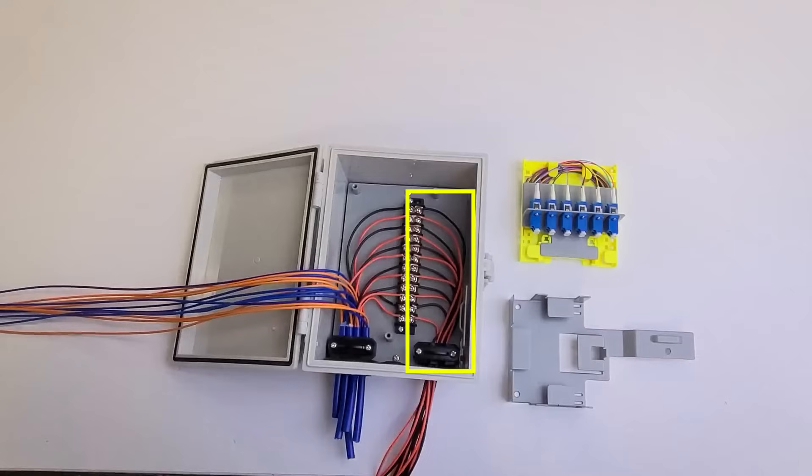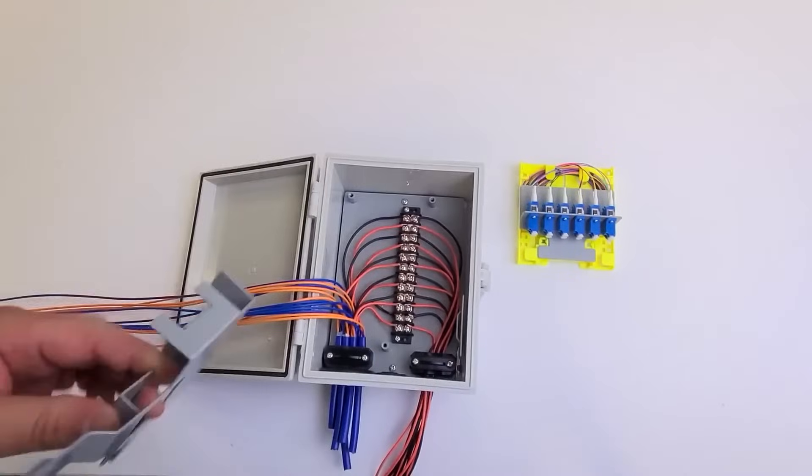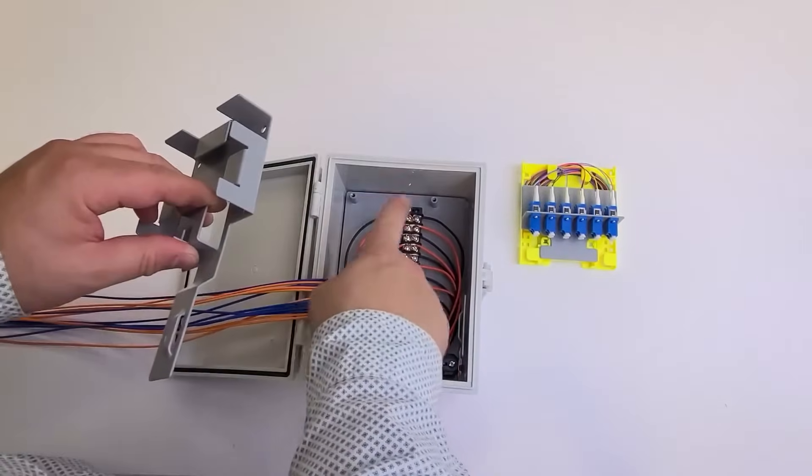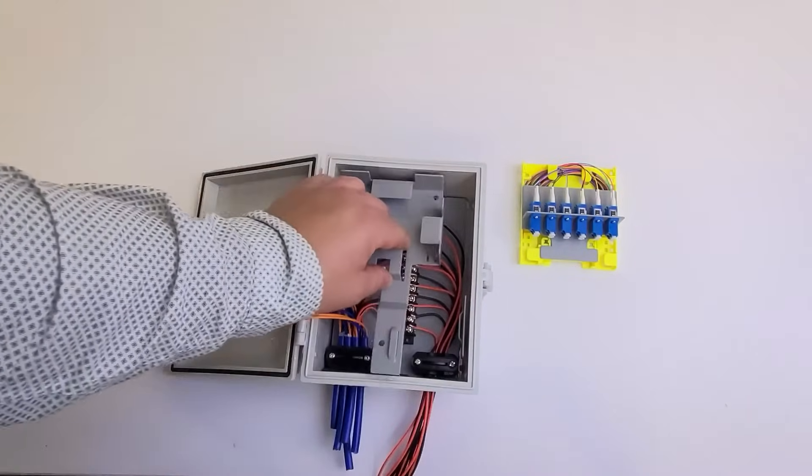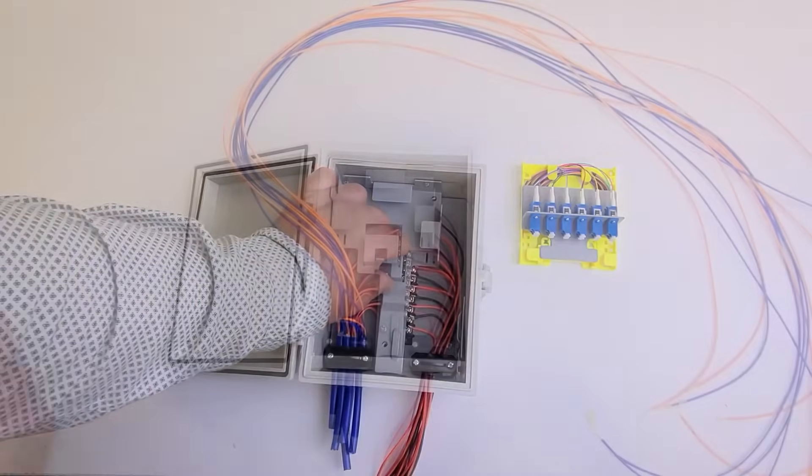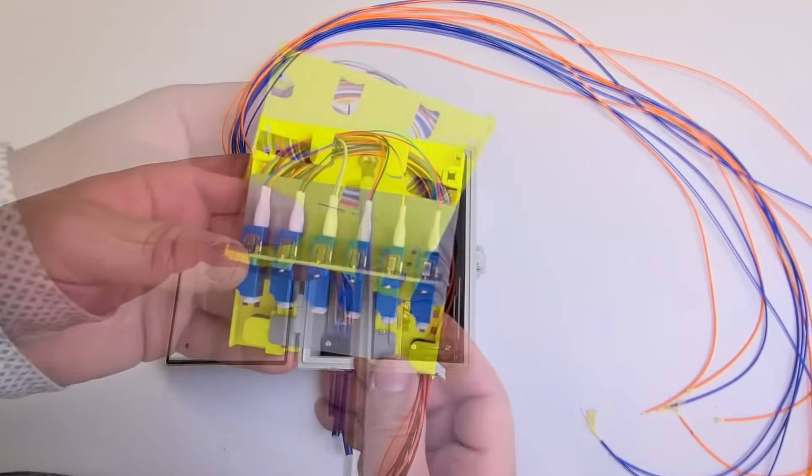Secure them in place with the strain relief bracket. Next, secure the bottom tray holder back in its place using the three screws.